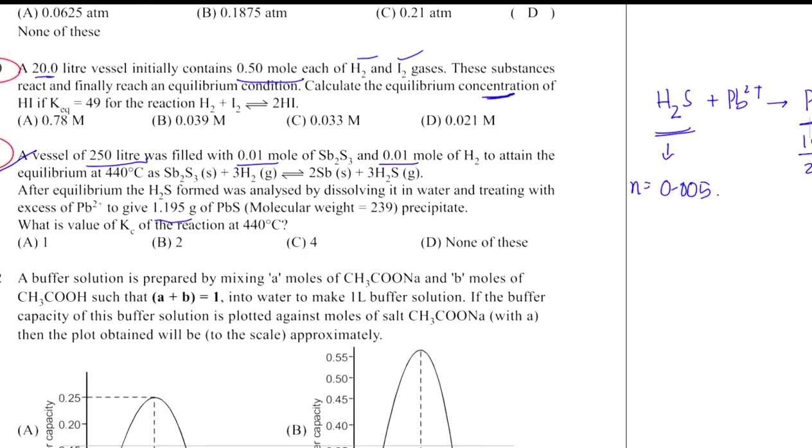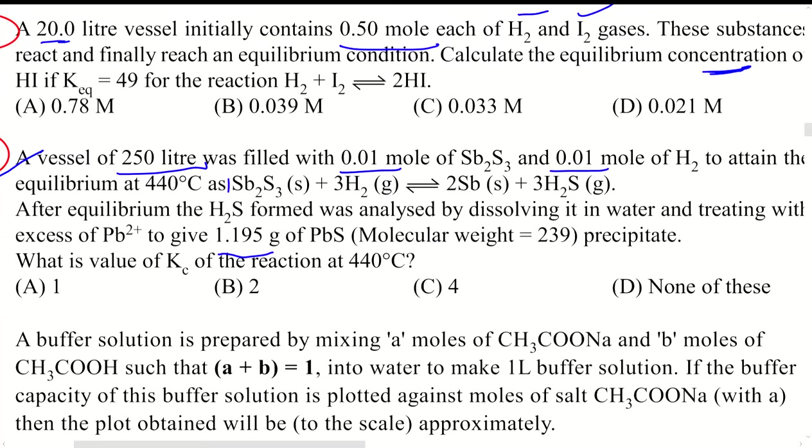In this equation we have 1 mole of SB2S3 plus 3 moles of hydrogen gas giving you 3 moles of H2S gas. Solids have no role to play in the equilibrium constant expression. So we have 3 moles each of H2 and H2S gases.